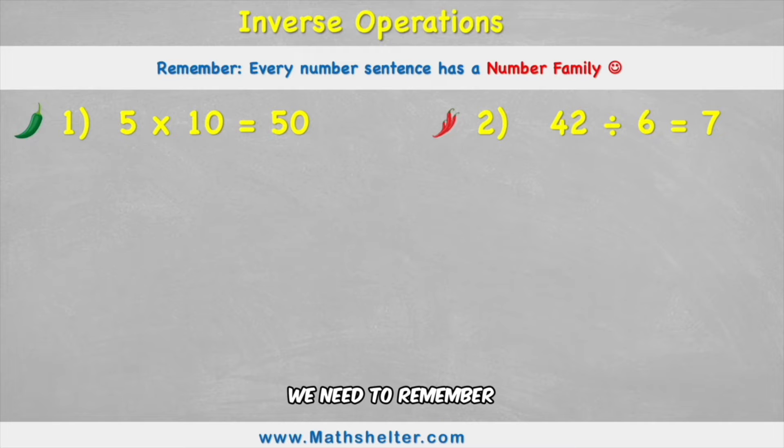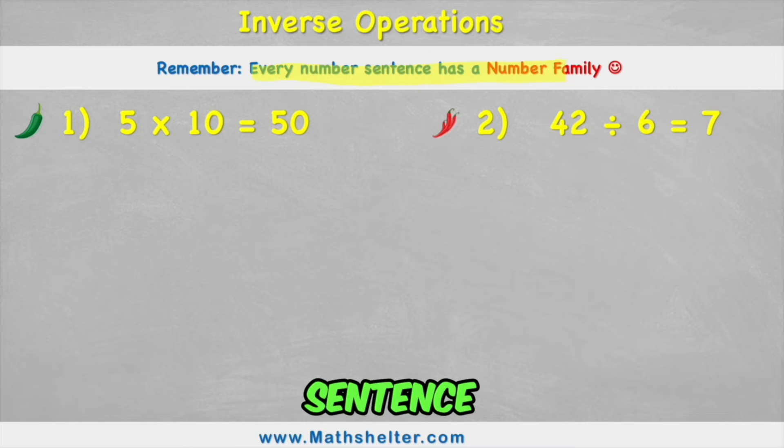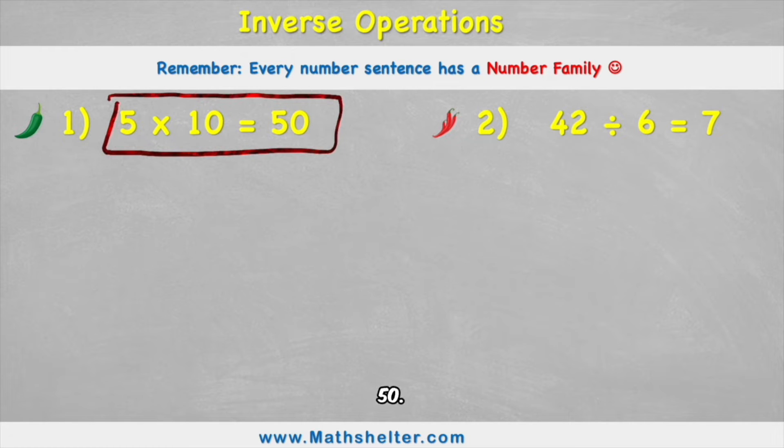For today's lesson we need to remember that every number sentence has a number family. But what does that mean? Well it means that this is a number sentence. 5 times 10 equals 50. That is a complete number sentence, but it's part of a number family. And in a number family we actually have four different number sentences.